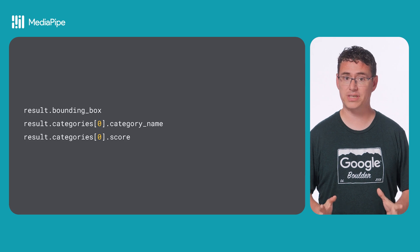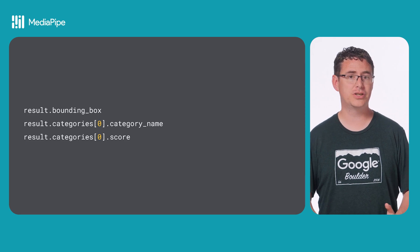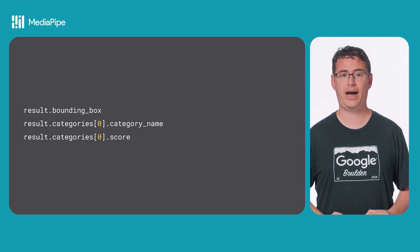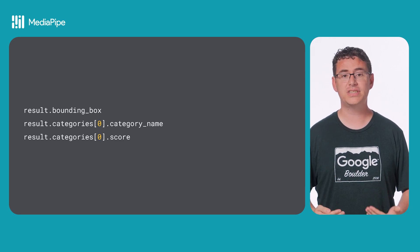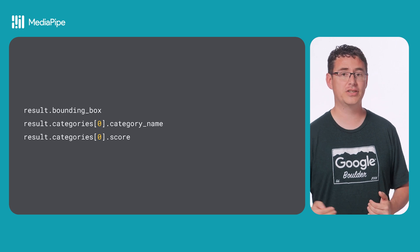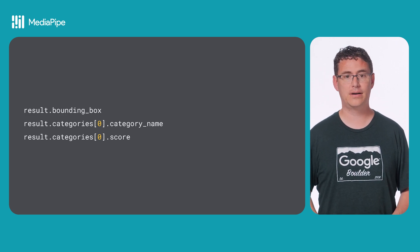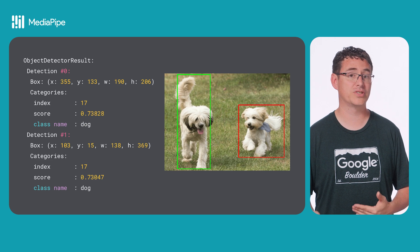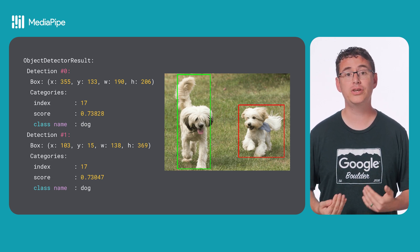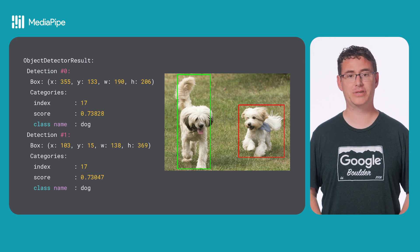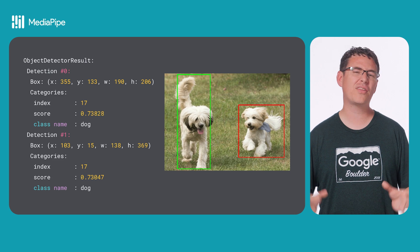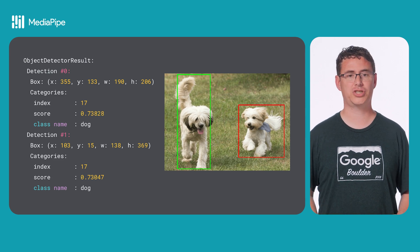Finally, this callback will receive a result object, which you can use to do whatever your goals are with your new Raspberry Pi app. In this slide, you can see how you'd retrieve the bounding box, object name, and detection confidence score from the result object. And to hopefully make navigating the result object a bit easier, this graphic shows what data you can expect to receive back from the object detector, as well as how it relates to an example image highlighting two different dogs in a single picture.